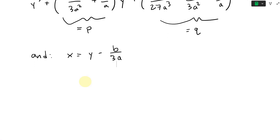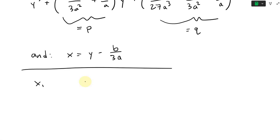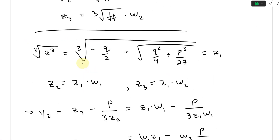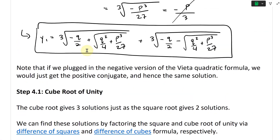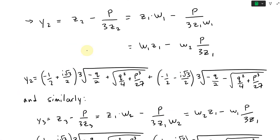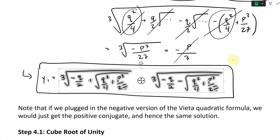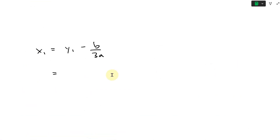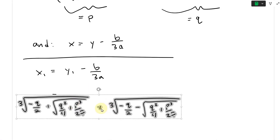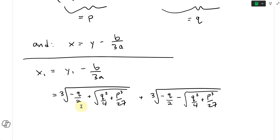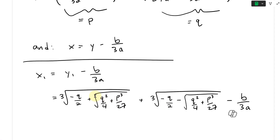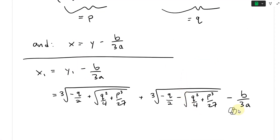So now let's solve this for the first term. The first one is going to be x1 is equal to y1 minus b over 3a. So this equals - what's our y1? Let's copy and paste our y1 and scroll back up to it. So we take our y1. So there's our y1 from earlier - we paste this right here. So y1 is equal to the cube root of negative q over 2 plus all this, and then we subtract b over 3a. Now we can plug in all our P and Q values and basically get our formula.